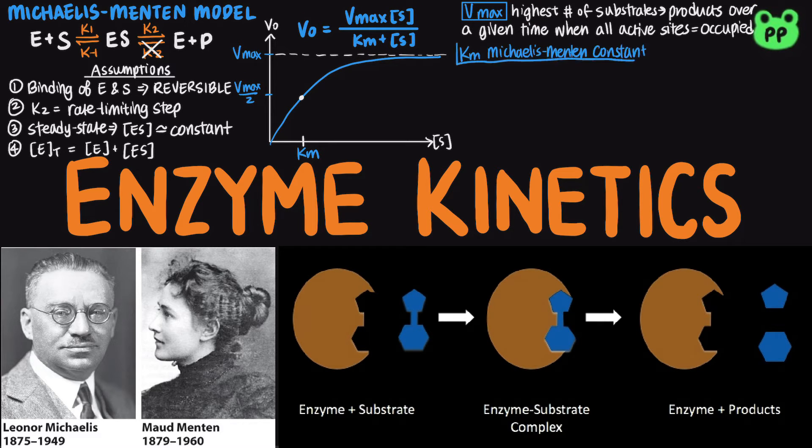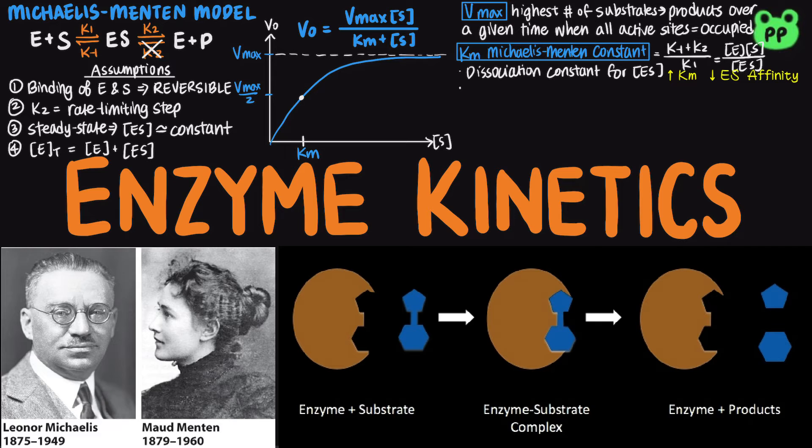The Michaelis-Menten constant, or Km, is defined as the dissociation constant of the enzyme substrate complex, which equals K-1 plus K2 over K1. The higher the Km value, the lower the affinity of enzyme to substrate. Km also represents the substrate concentration when half the active sites are occupied.